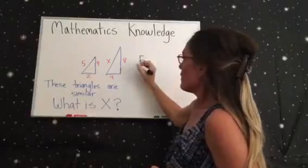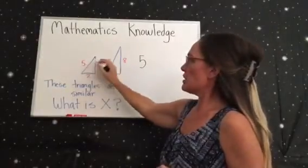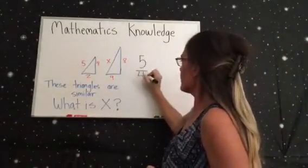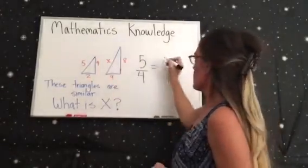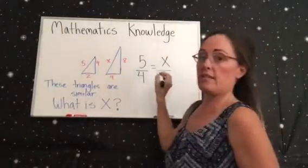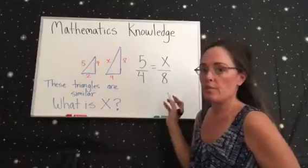So we have a 5 for that hypotenuse, and then I'm going to use the length for the bottom of the fraction, equals X over 8. And now this is where you cross multiply.